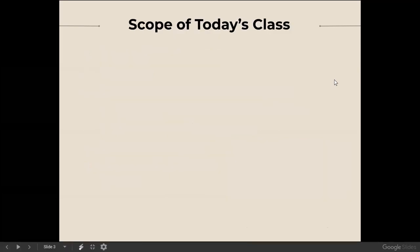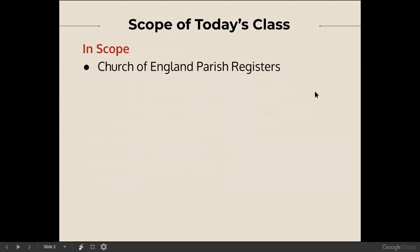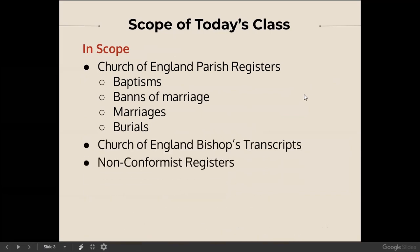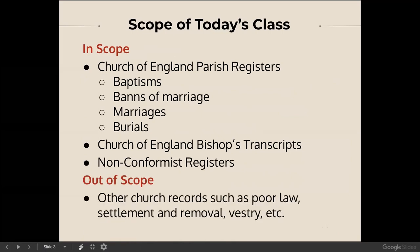The scope of today's class includes Church of England parish registers, which cover baptisms, banns of marriage, marriages, and burials. We'll also be touching on bishop's transcripts and nonconformist records. What we are not going to cover today includes other types of church records such as poor law, settlement and removal, vestry records, and things like that. We will be focusing basically on church records that relate to ordinances associated with a vital event.